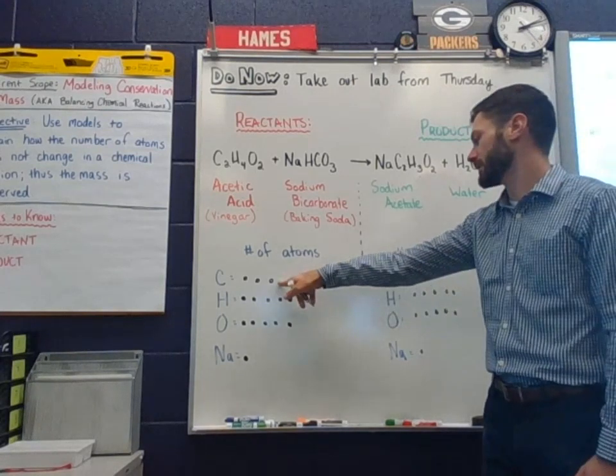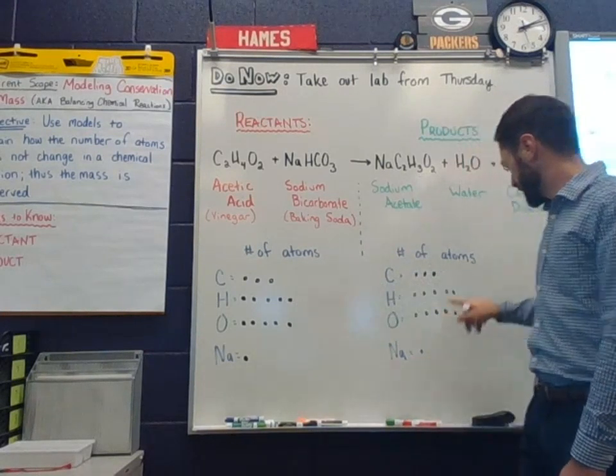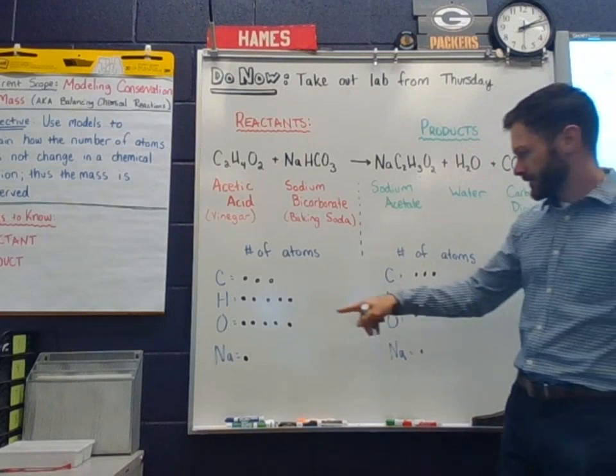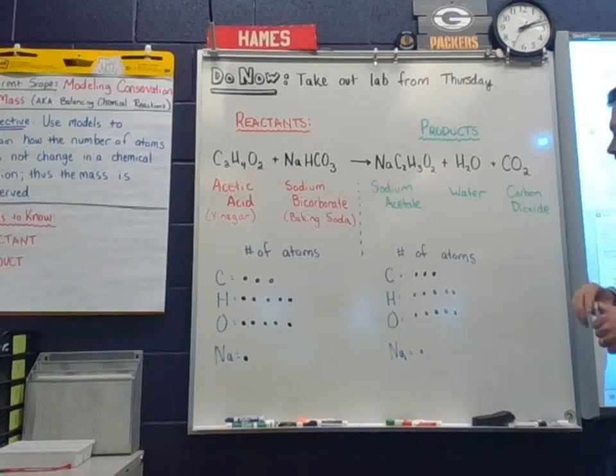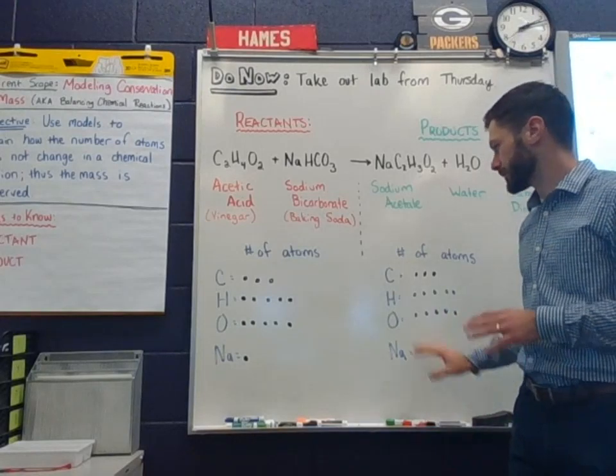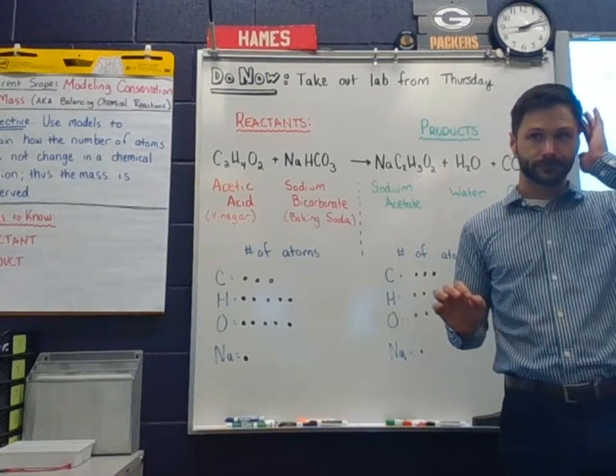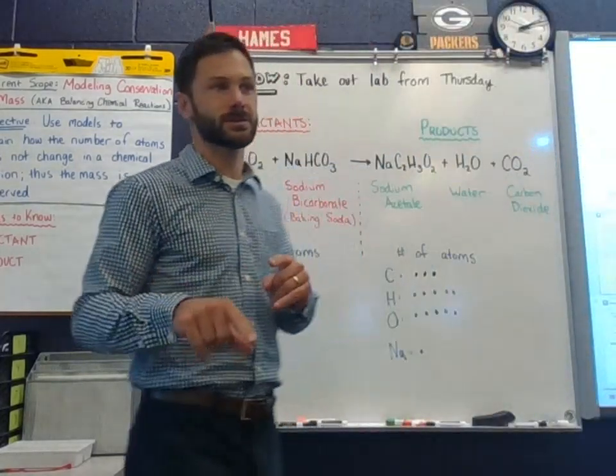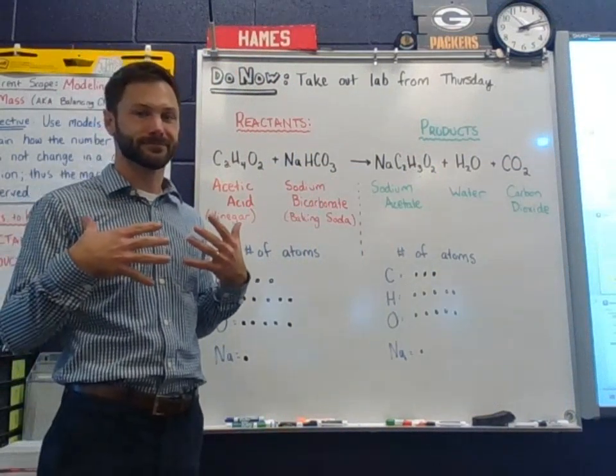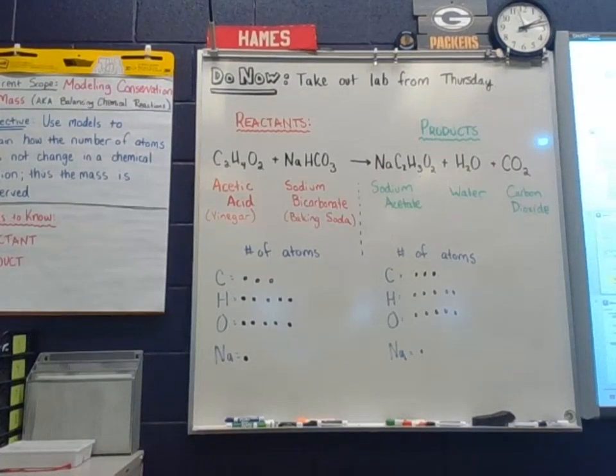Okay. Now let's check our numbers here. We have three here, carbon, three of carbon here. We have five hydrogen here. We have five over here. We have five oxygen and five oxygen and one sodium and one sodium. In your own words, how do you think this supports right here, the law of conservation of mass? Why don't we do this? Do like 20 to 30 seconds, turn and talk first, and then we'll share that.